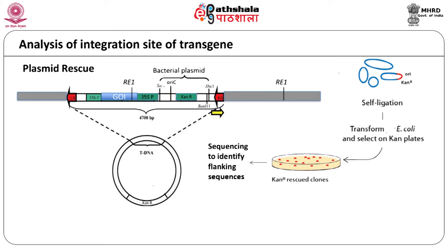Another technique used for identifying the site of integration is the plasmid rescue technique, in which bacterial plasmids are recovered from fragments of transgenic eukaryotic genomic DNA. The plant genome with integrated T-DNA, having a bacterial selectable marker gene and bacterial origin of replication besides the gene of interest, is cut with a restriction enzyme having one site in the gene of interest. The RE fragments are self-ligated using ligase and plated on a selection medium with the antibiotic specific to the bacterial selectable marker. Only those plasmids having the bacterial origin of replication and the bacterial selectable marker will form colonies, and these plasmids are sequenced to identify the plant genomic region flanking the T-DNA insertion.